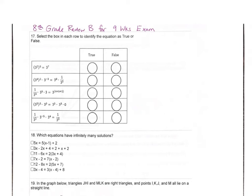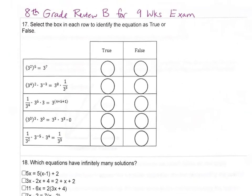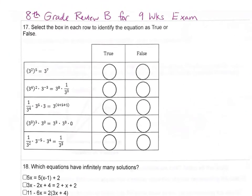This is the 8th grade review B for the 9-weeks exam. On number 17, we're selecting the box to identify if the equation is true or false. For this first one, we have 3 squared raised to the 5th power. We have a power raised to a power, and we want to see if it's equal to 3 to the 7th.